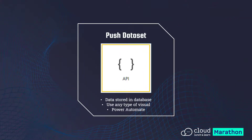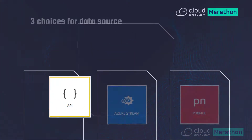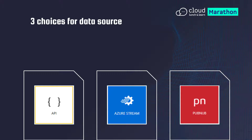With the API option we'll look at today, this creates a push dataset, and this is really the easiest way to get started with real-time streaming. It makes it really accessible — you don't need any other subscriptions like Azure Stream to use this one. What it does is collect data that gets stored in Power BI service, so as it comes through you can see it update immediately on your dashboard. We use a tool called Power Automate to enable this. Taking the no-code option, Power Automate is the easiest and probably the fastest way to build this. And the other great thing is that we have access to all the different types of visuals available in Power BI, whereas with Azure Stream and PubNub you're only limited to a few different visual types.